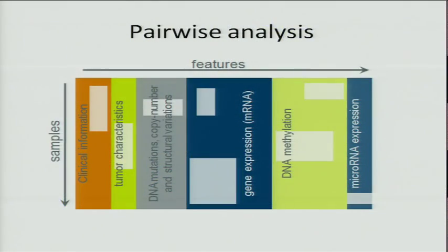I will start with pairwise analysis — looking at correlations between different data elements, for example between gene expression and methylation, or between a mutation and some clinical variable or outcome. This type of analysis is commonly done, even on single data types. Within TCGA, we also look for correlations between different data types, such as expression versus methylation or expression versus copy number variation. There are a number of analysis modules routinely doing this kind of analysis in Broad's Firehose pipeline.